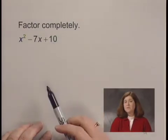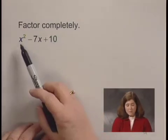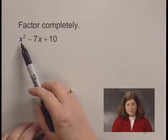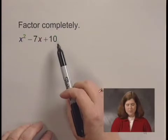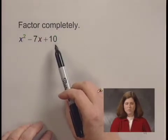We can check to see if it's a trinomial square, but although x squared is a square, neither 7x nor 10 is a square. So we do not have a perfect square trinomial.